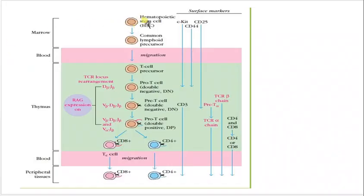The hematopoietic stem cell is a multipotent stem cell — it can give rise to all types of blood cells in our body. It is present in the bone marrow. From the hematopoietic stem cell, the common lymphoid precursor is formed, and this common lymphoid precursor can give rise to both B-cells and T-cells. This common lymphoid precursor migrates through the blood and reaches the thymus, where it becomes the T-cell precursor.